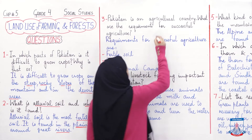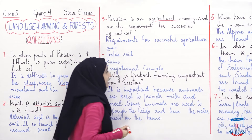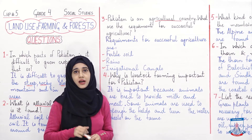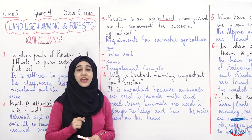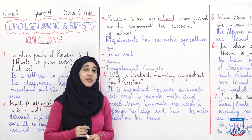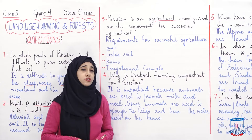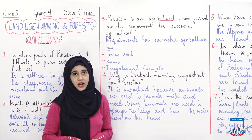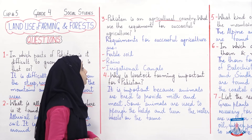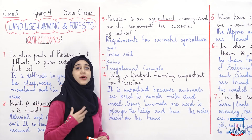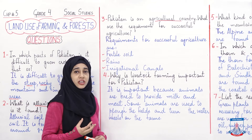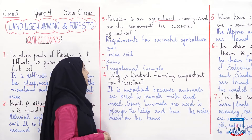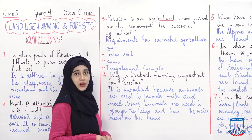تو ہم نے بات کی تھی کہ what is an agricultural country — جہاں پہ بہت زیادہ agriculture کا کام ہو، کھیتی باڑی کا کام ہو، اس کو ہم کہتے ہیں agricultural country. ہماری country بھی ایک agricultural country ہے کیونکہ fortunately ہماری country میں کئی ایسے علاقے ہیں جہاں agriculture کا کام بہت اچھے سے کیا جا سکتا ہے۔ تو وہ آپ سے پوچھا ہے کہ ایسی کونسی requirements ہیں جو کسی بھی country کو agricultural country بنانے کے لیے ضروری ہیں۔